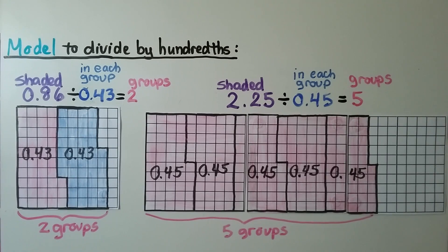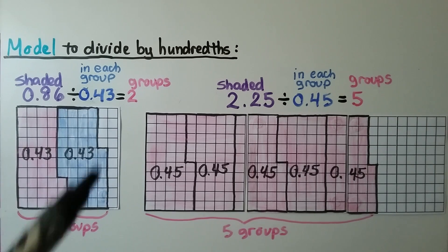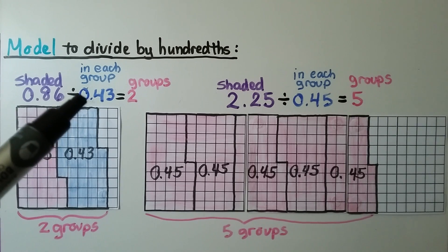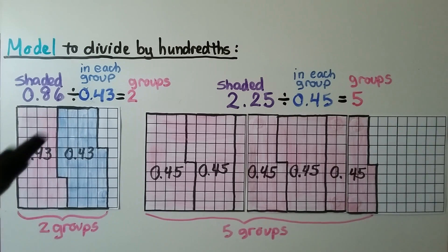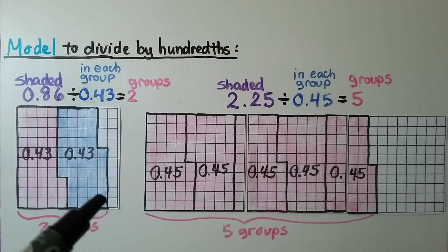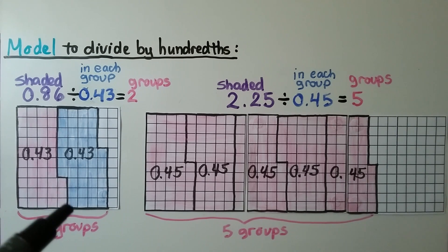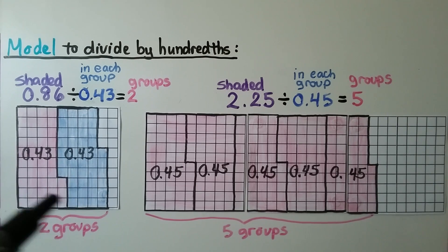To model dividing by hundredths, we have a model with 100 squares. We need to do 86 hundredths divided by 43 hundredths. We shade 86 hundredths — that's 8 columns and 6 separate ones. We count groups of 43 and draw a line or cut to separate them. Count another 43 and we see we made 2 groups. It's equal to 2.